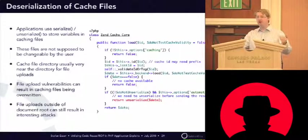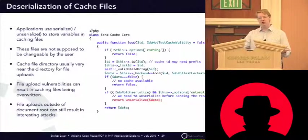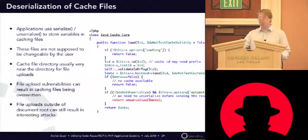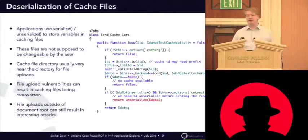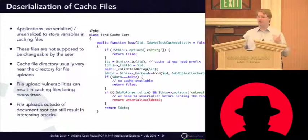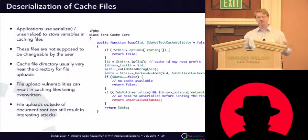This also means when there's a file upload vulnerability in the application, there must be a single directory that's writable for the file upload. Normally when you can upload something to a temporary directory that's not accessible, that's usually not a problem — it's a file upload vulnerability, but it's not ranked so high in severity because you cannot do much with it. But when you take the caching files into consideration, if you can upload a file to this temporary directory, you can upload a cache file that is later used and unserialized — so you can attack unserialize again.